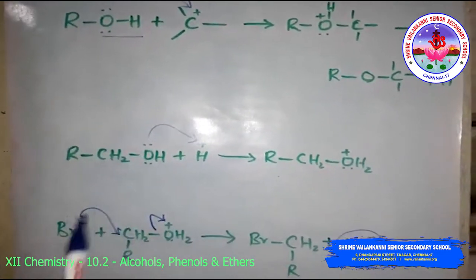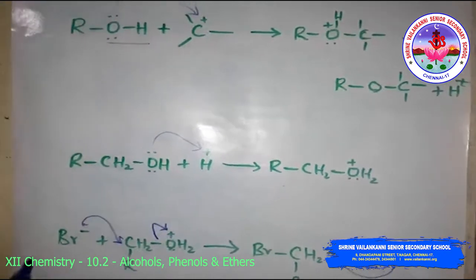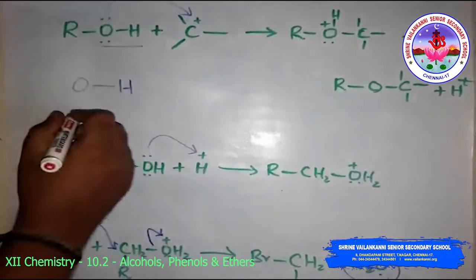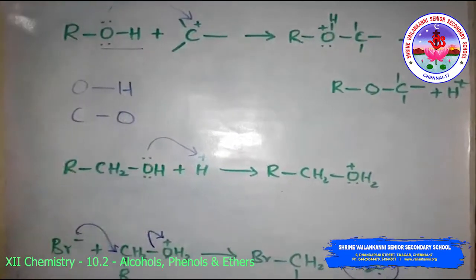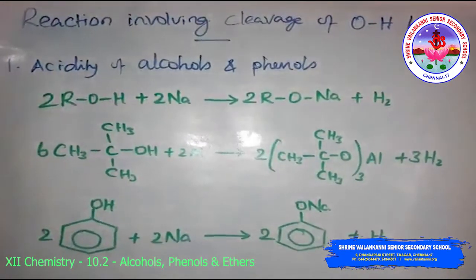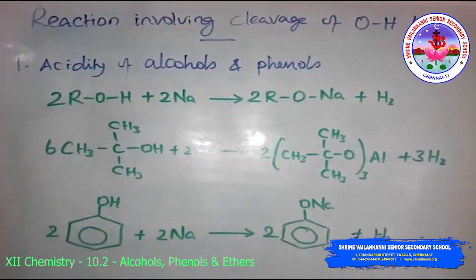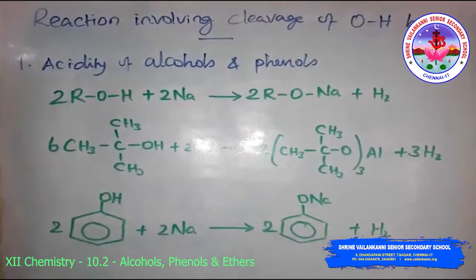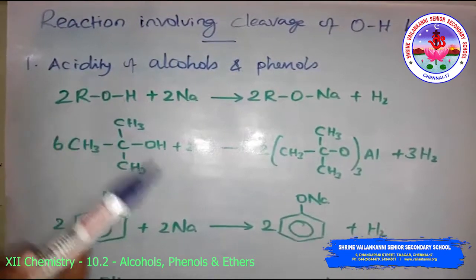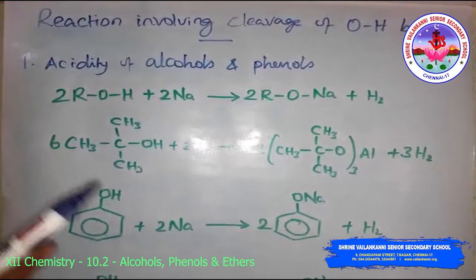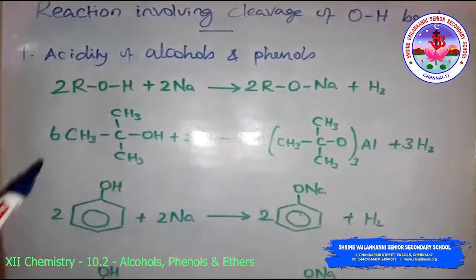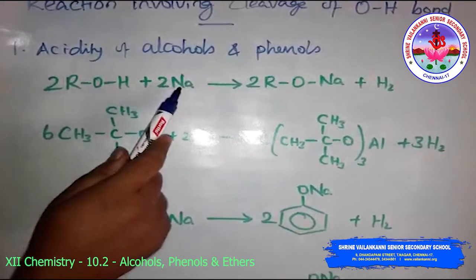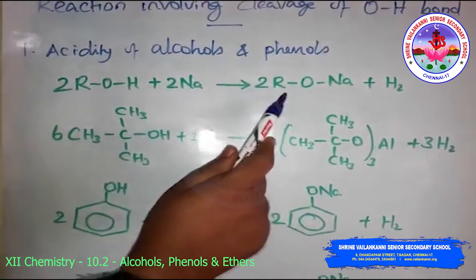The reactions of alcohols and phenols may be divided into two categories: reactions involving cleavage of the O-H bond, and reactions involving cleavage of the C-O bond. For reactions involving cleavage of the O-H bond, we consider the acidity of alcohols and phenols. Both react with active metals like sodium, potassium, and aluminum to yield the corresponding alkoxide or phenoxide and hydrogen gas.